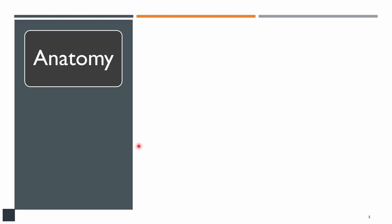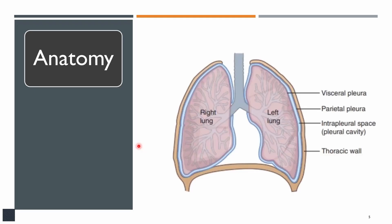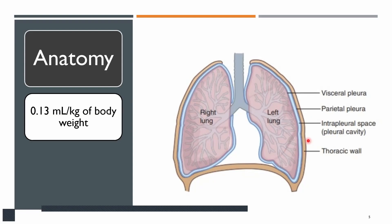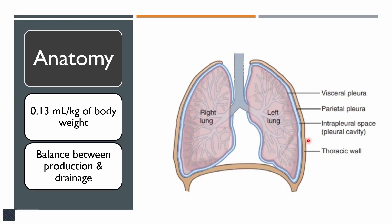Let's discuss the anatomy of the pleural space. The pleural space is a potential space between two pleural surfaces. Visceral pleura is attached to the outer surface of the lungs, and parietal pleura is attached to the inner surface of the chest wall. Usually there is a very small amount of fluid in this pleural space — 0.13 ml per kg of body weight, which for a 60–70 kg person comes to around 8 to 10 ml. There is a balance between production and drainage, so in a normal person there is no accumulation of fluid.